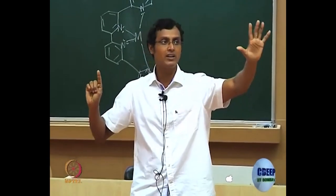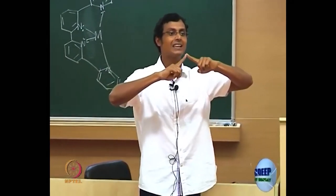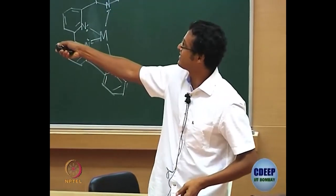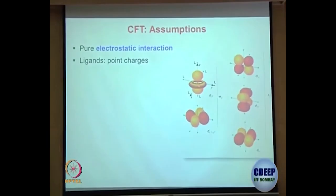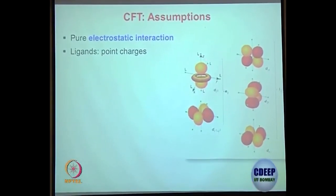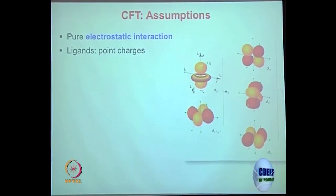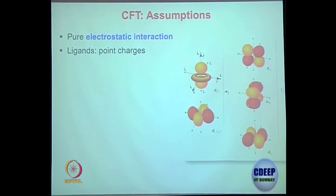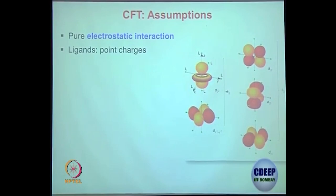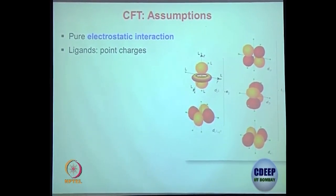We have five d-orbitals. The dz² orbital has its electron density along the z-axis — lobes above and below. Let us define: this is the x-axis, this is the y-axis, and this is the z-axis.